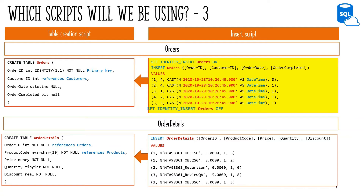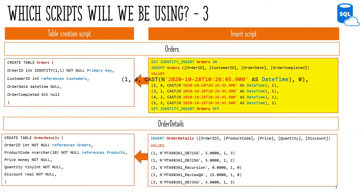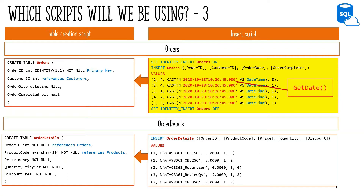The order insert also illustrates how a string can be cast into a date-time field. This insert will only succeed if the string can be cast to a date-time. If you want to use the current date, you can replace the value with a getDate() function, which returns the current database system date and time. Remember to use valid values when inserting into a foreign key field — in this case, the foreign keys ensure that an order is made by an existing customer.